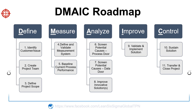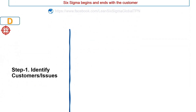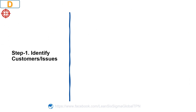In recap, Six Sigma begins and ends with the customer. The first step in the DMAIC is to identify customer issues.